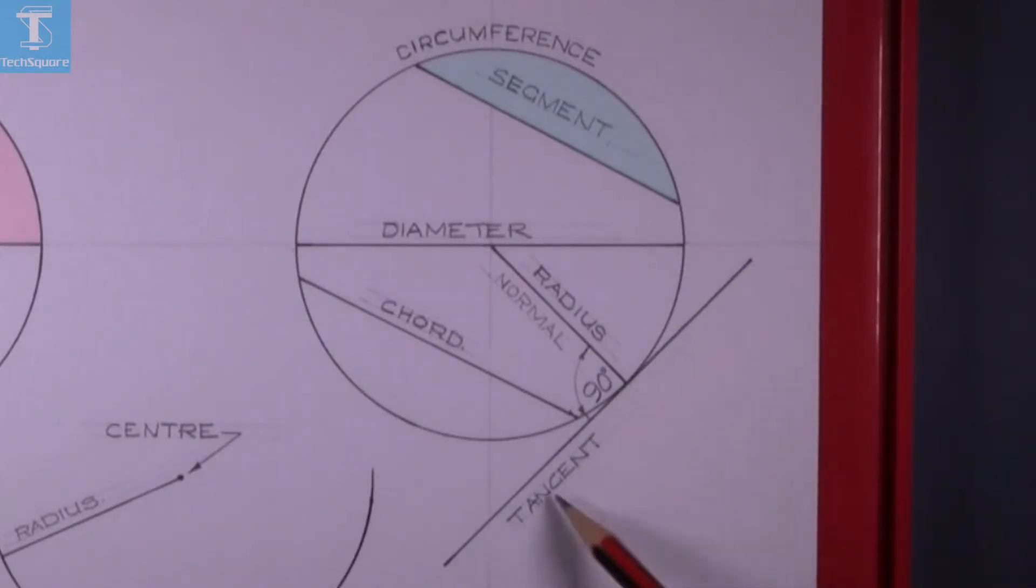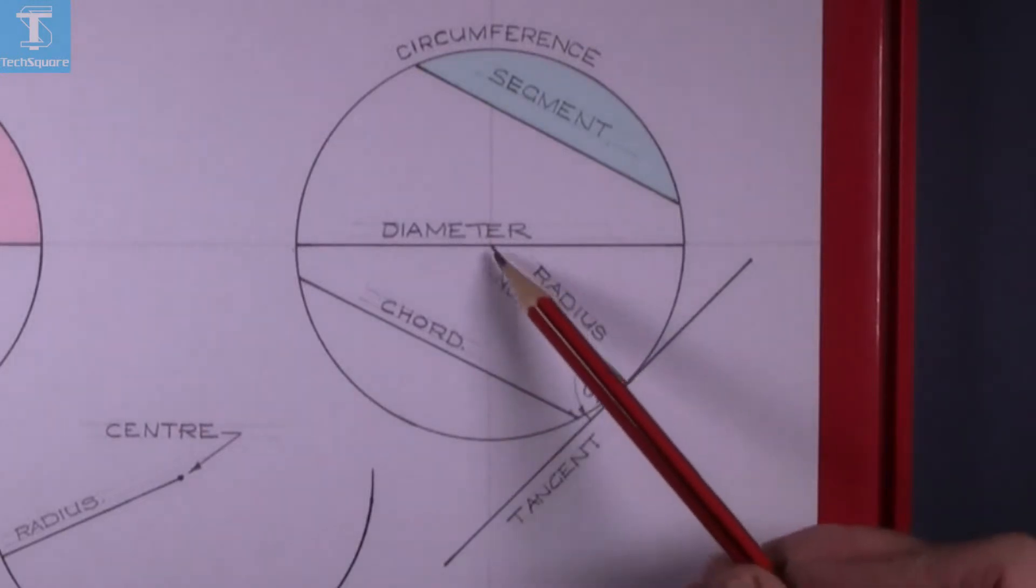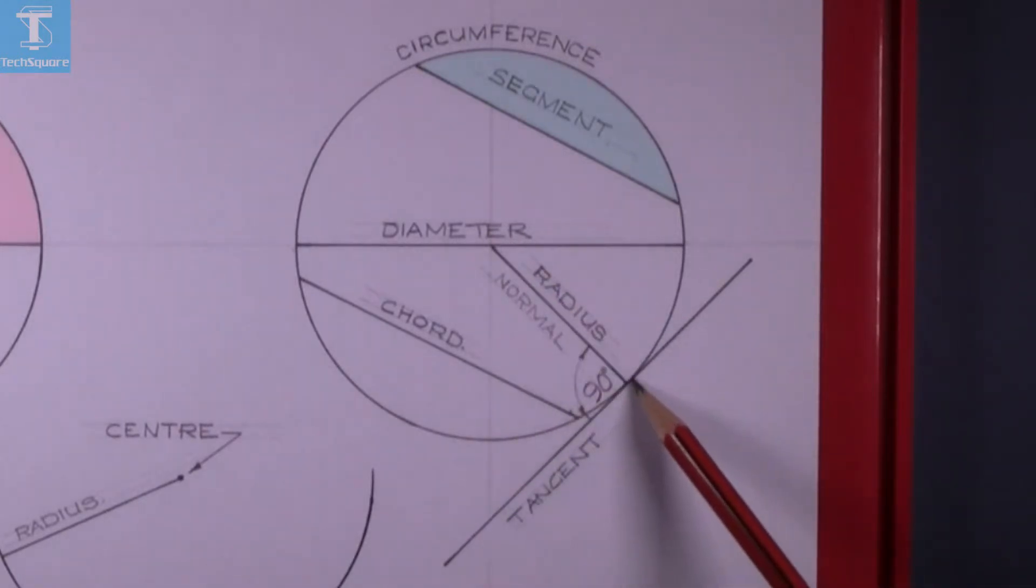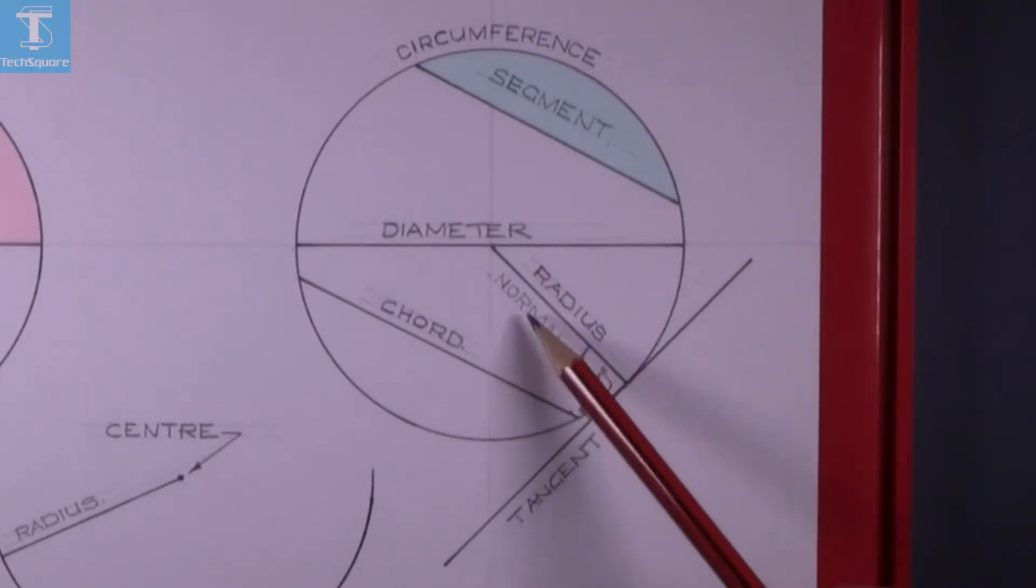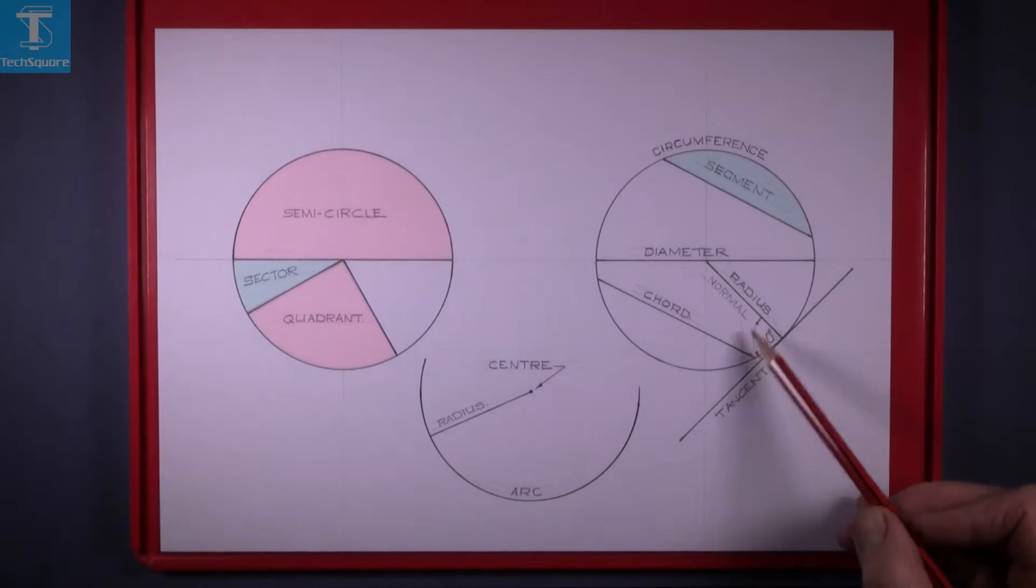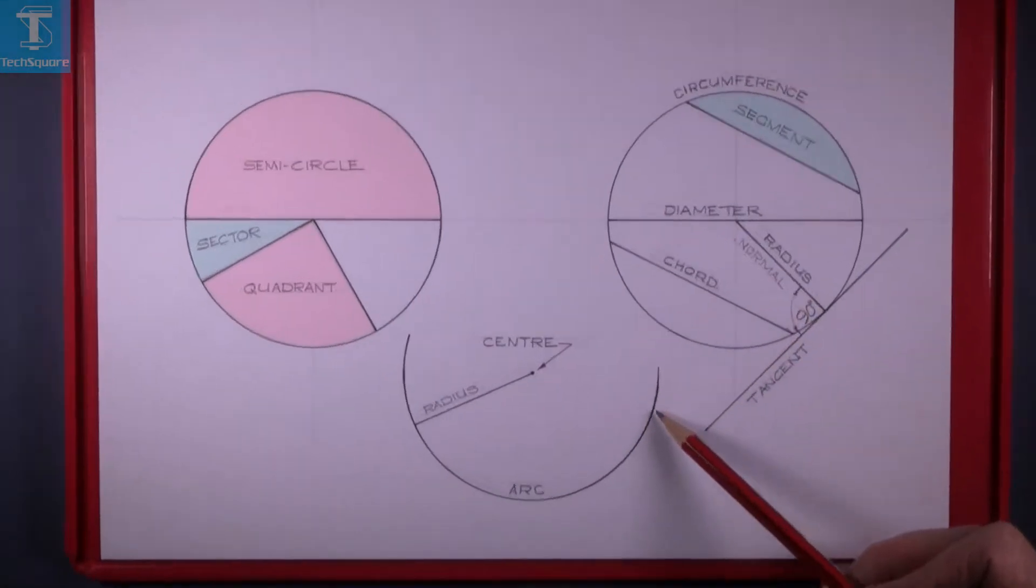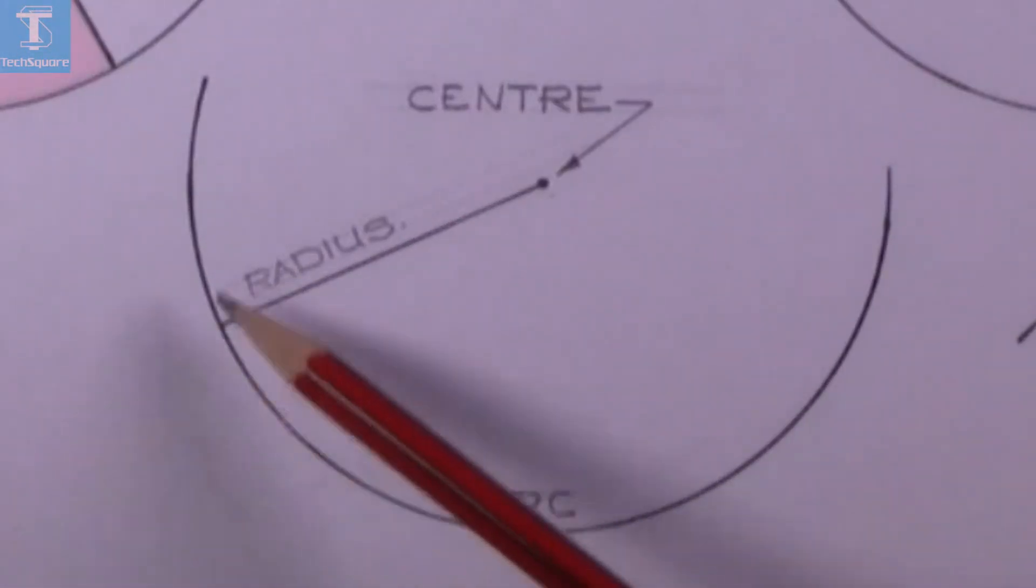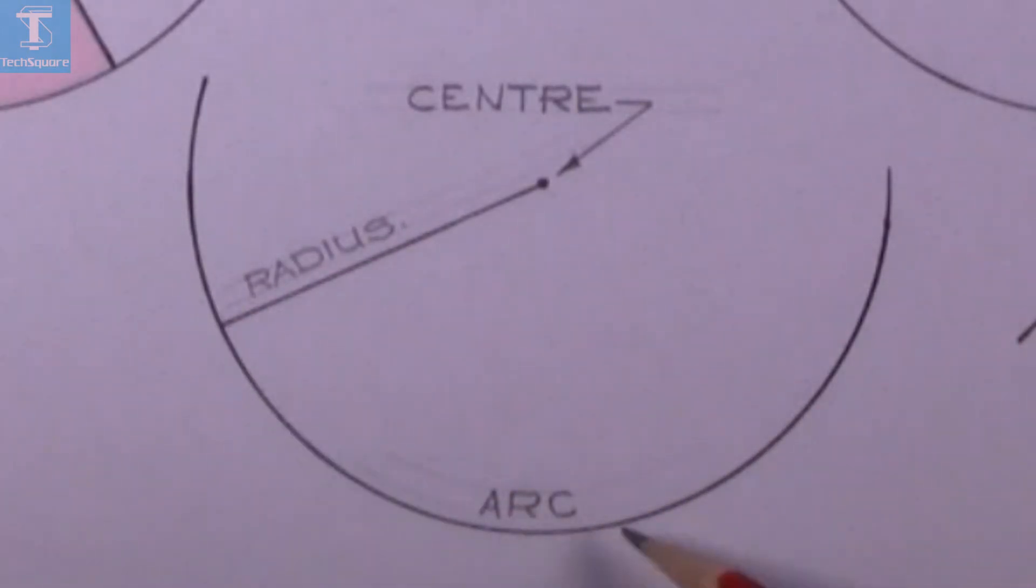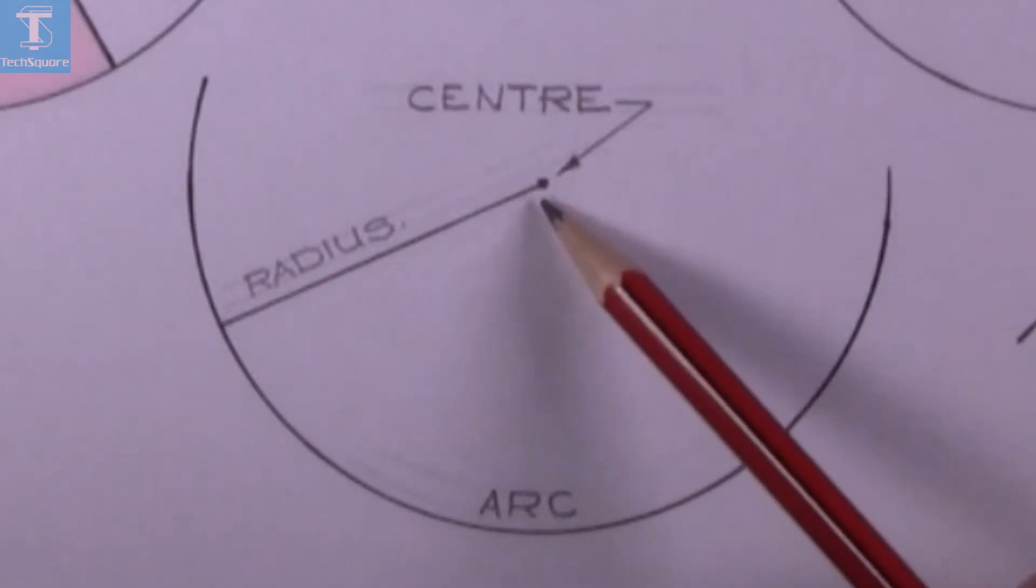The line that comes out from the center of the circle at 90 degrees to the tangent is called a normal. And here this is just another part, it's called the arc.